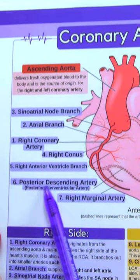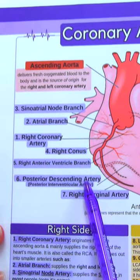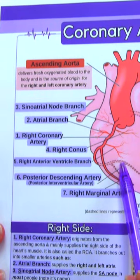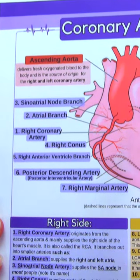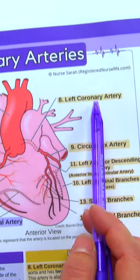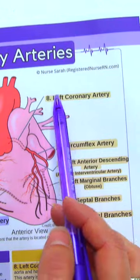Then it splits off into the posterior descending artery, which goes to the posterior side of the heart. Now this can also come out of the left coronary artery in some people.